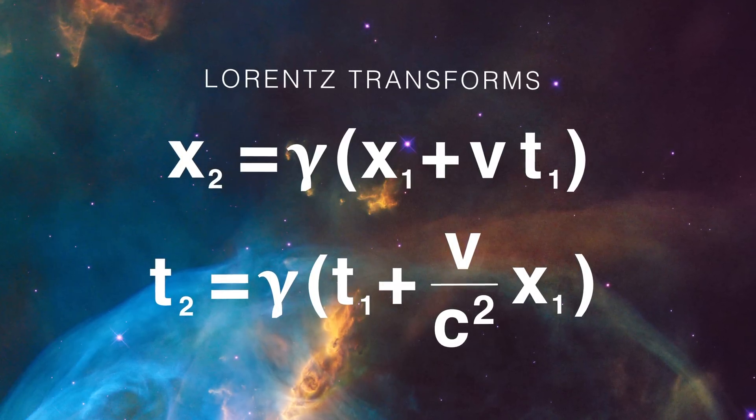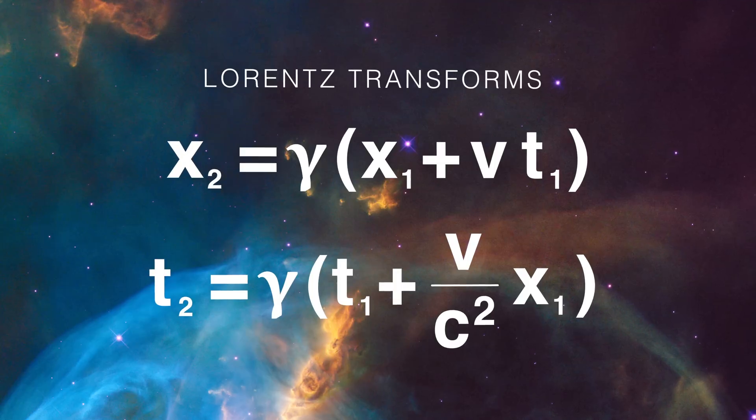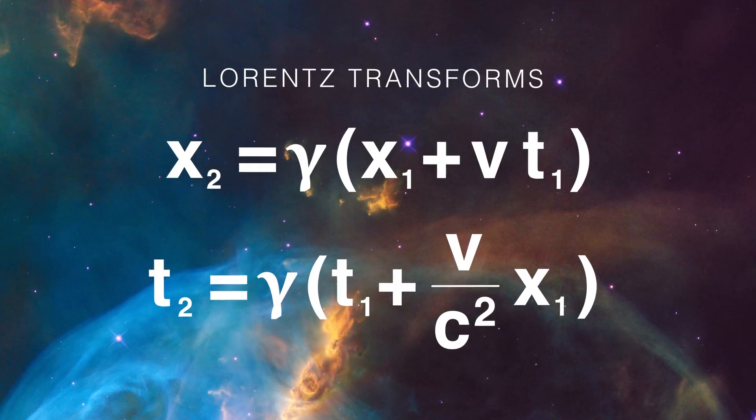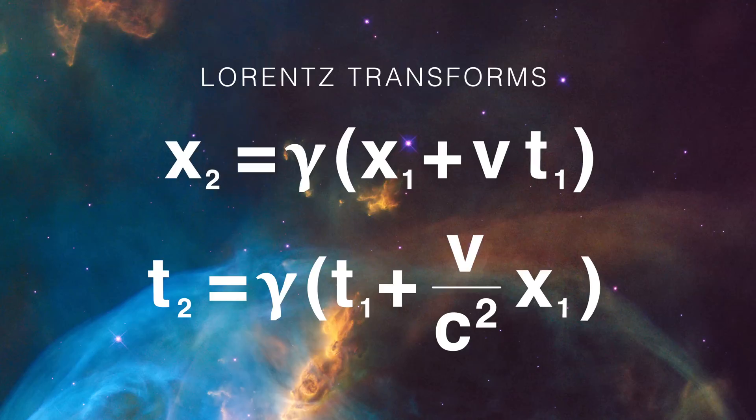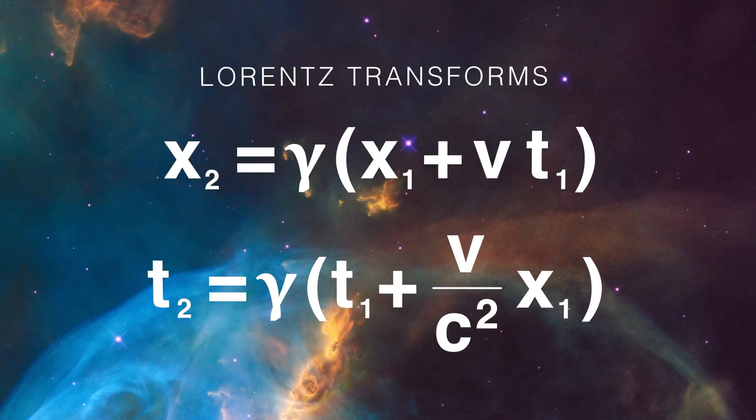If we just label two people as one and two and person two is moving with respect to person one, then the Lorentz equations are just what we see here. I'll pause for a moment so that you can look at them.